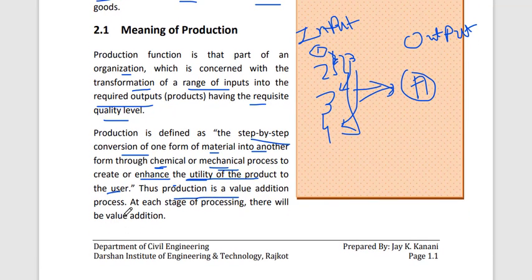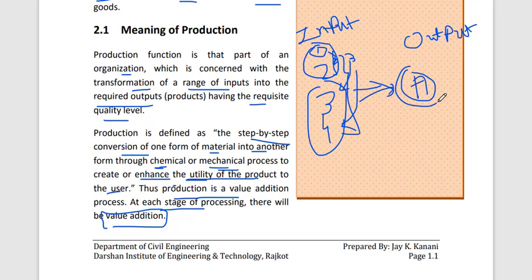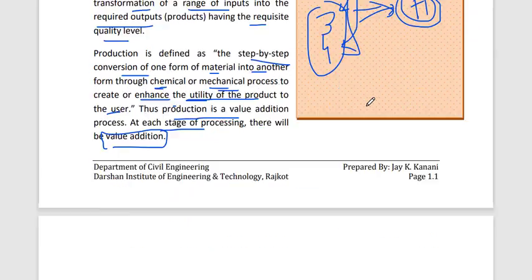Production is a value addition process. At each stage of processing there will be value addition — we assess the value of merging two raw materials, and determine the output price at which we can sell. We do not want a loss, so at each input stage we must calculate cost so that after the summation of all inputs we can determine the selling price and make a profit.